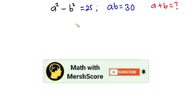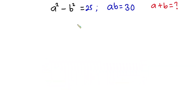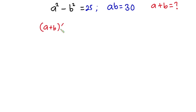But before we begin, if you are new here, please consider subscribing and also don't forget to like this video. Now let's get started. Considering the left hand side of this equation, you can see this is a difference of two squares, so we can write it as (a + b) times (a - b), and this is equal to 25.